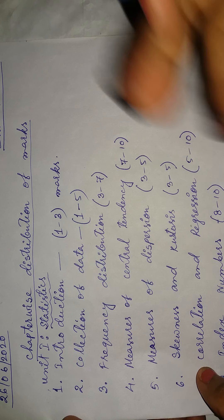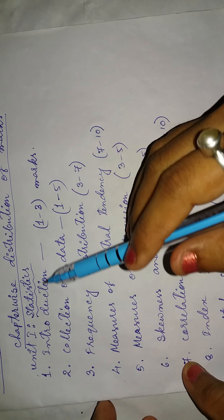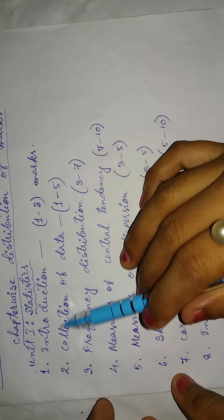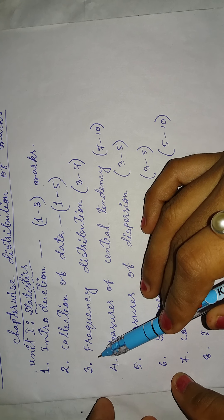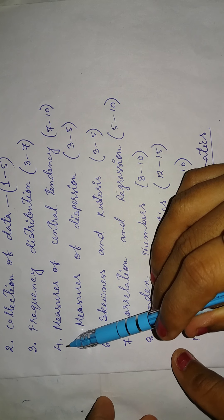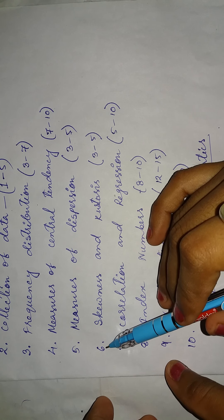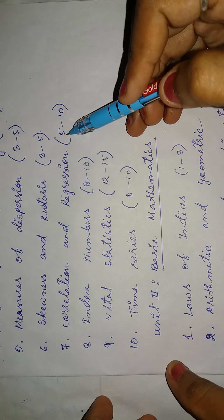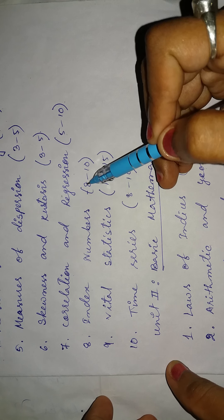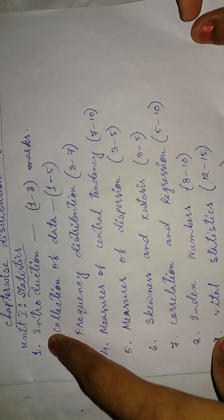Now before starting the lesson, I want to share something about the mark distribution. In this book we have two units: unit one is statistics and unit two is basic mathematics. In the statistics unit we have 10 chapters. Number one, introduction, carries one to three marks in the final exam. Chapter two, collection of data, one to five marks. Chapter three, frequency distribution, three to seven marks. Chapter four, measures of central tendency, seven to ten marks. Five, measures of dispersion, three to five marks. Six, skewness and kurtosis, three to five marks. Chapter seven, correlation and regression, five to ten marks. Chapter eight, index numbers, eight to ten marks. Nine, vital statistics, 12 to 15 marks. And number ten, time series, eight to ten marks. These are allocations for unit one from the statistics part.